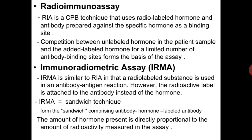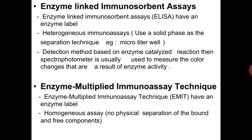The amount of hormone present is directly proportional to the amount of radioactivity in the assay. Another method is Enzyme Linked Immunosorbent Assay, known as ELISA. ELISA uses a heterogeneous immunoassay technique with a solid phase as a separation technique, typically a microtiter well. The detection method is based on an enzyme-catalyzed reaction, and spectrophotometry is usually used to measure the color change resulting from enzyme activity.